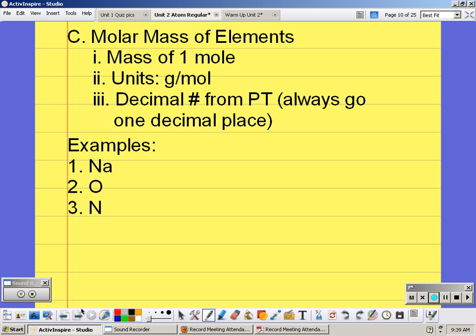We're going to always go to one decimal place. So if we look on the periodic table at sodium, which is number 11, we want to go to one decimal place. On the periodic table, it's 22.989770. Well the 8 is going to round the 9 to a 10, which changes that to a 3. So the molar mass would be 23.0.